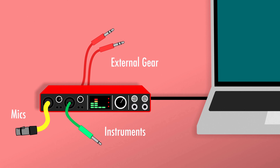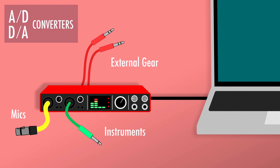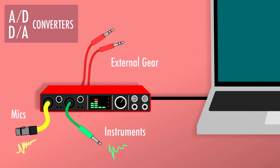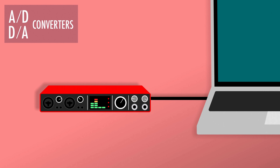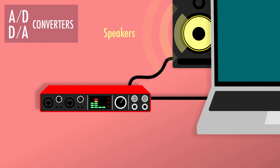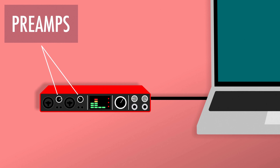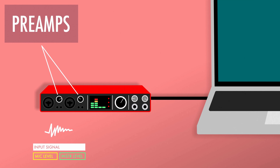Put simply, an audio interface is a device that helps you connect your microphones, instruments, and other audio gear to your computer for recording. It has two main components. The first is the analog-to-digital and digital-to-analog converter. This allows the interface to convert analog audio signals — like those from your microphone while you're podcasting, or from your guitar when you're recording your latest killer guitar solo — into a digital signal your computer can understand, and also convert the digital signal back to an analog signal you can hear in your headphones or speakers.